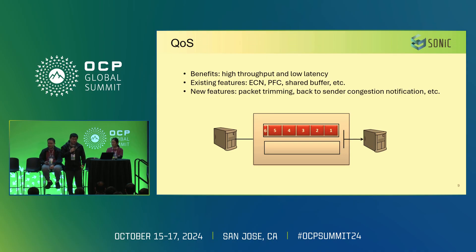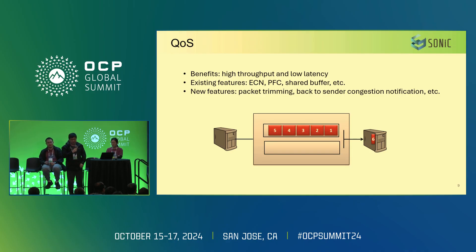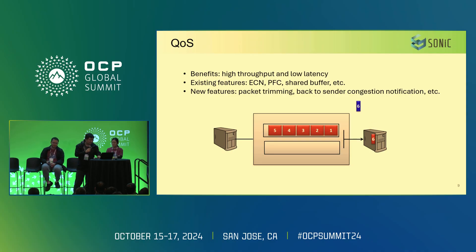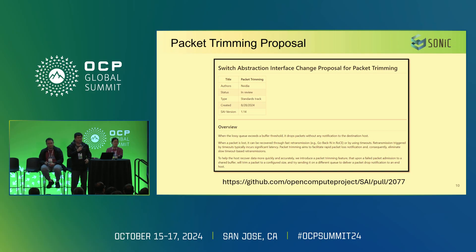One of the things we're working on is bringing new features like packet trimming and back-to-sender congestion notification. With packet trimming, instead of dropping packets when the buffer overflows, we trim the packet, put it into a high-priority queue, and it reaches the receiver and gets back to the sender. So instead of using timeout to detect packet loss, you get expedited feedback from the switches for quicker notification. We developed a size specification among the community and are working on SONiC features to enable this for the AI network.